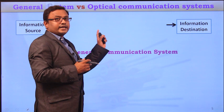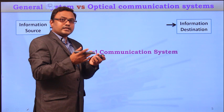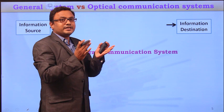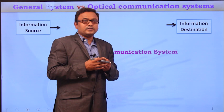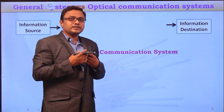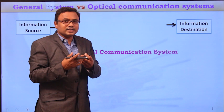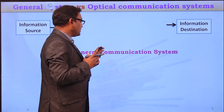In a general communication system, there is an information source and an information destination, and the source and destination must be connected. To transfer voice, for example, it is not possible to transmit the sound signal as it is over the channel. So we have to convert the physical information into electrical signals, and these electrical signals must be transmitted over the channel in the case of a general communication system.